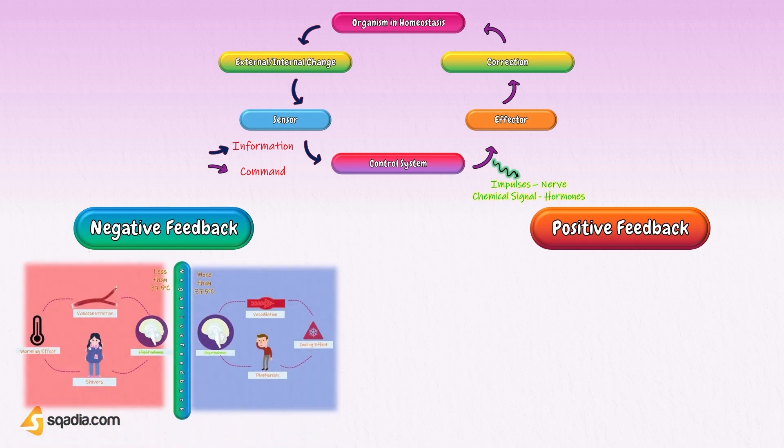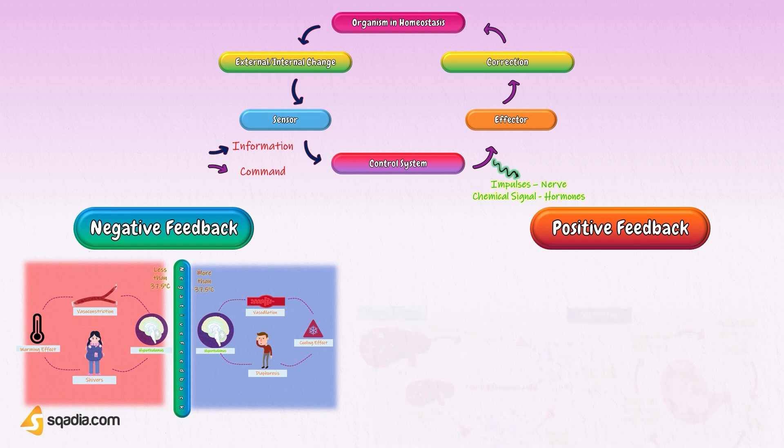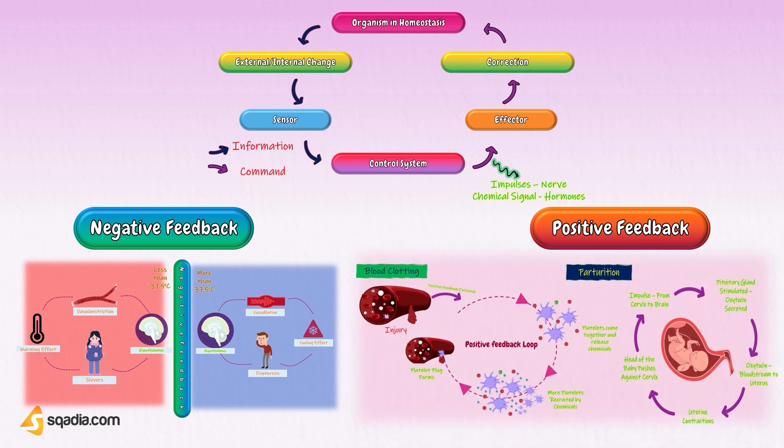Whenever any change occurs, the system receives and reacts to two types of feedback: negative feedback and positive feedback.